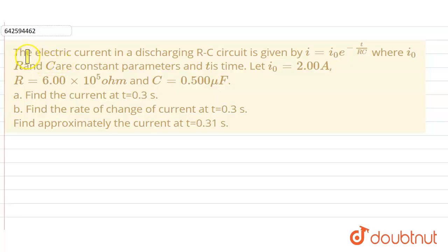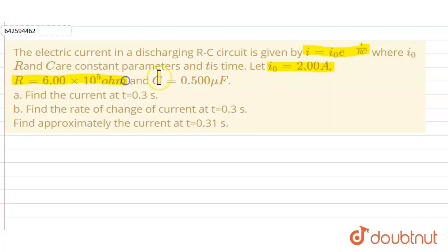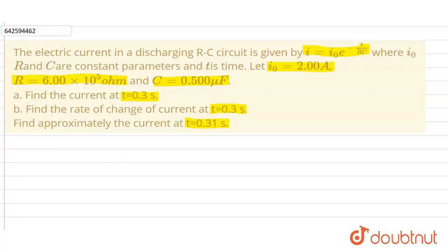Our question is: the electric current in a discharging RC circuit is given as I = I₀ e^(−T/RC), where I₀, R, and C are constant parameters and T is the time. Given that I₀ = 2 ampere, R = 6×10⁵ ohm, and C = 0.5 microfarad. Find the current at time T = 0.3 second, find the rate of change of current at T = 0.3 second, and find approximately the current at T = 0.31 second.